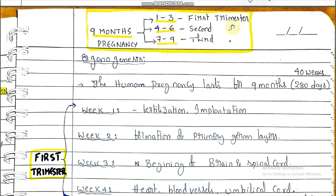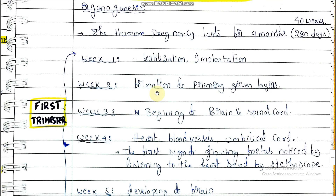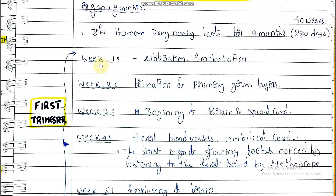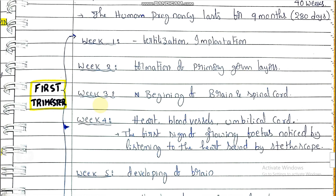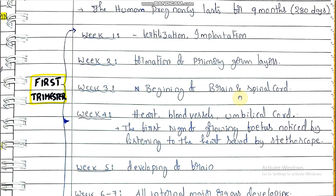First trimester covers months one to three, second trimester months four to six, and third trimester months seven to nine. In the first week, fertilization takes place followed by implantation within the first seven days. In the second week, gastrulation occurs with formation of primary germ layers — ectoderm, endoderm, and mesoderm.